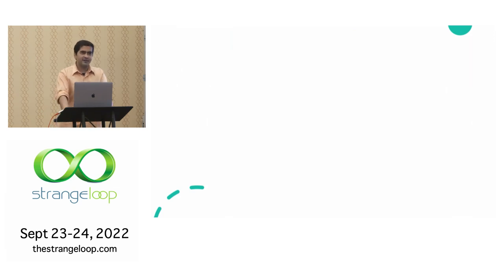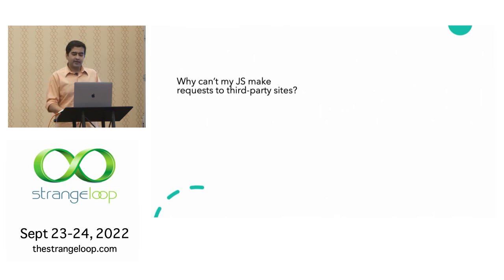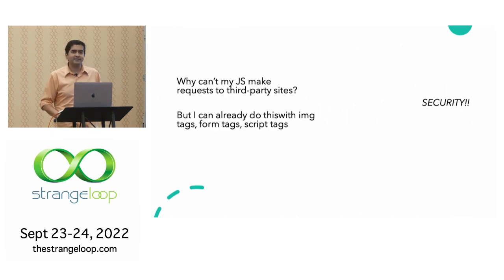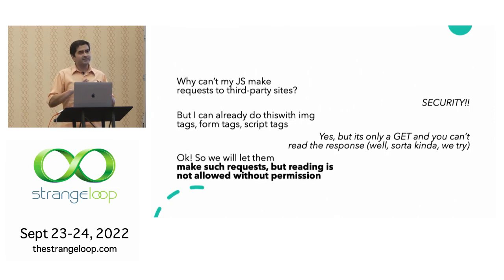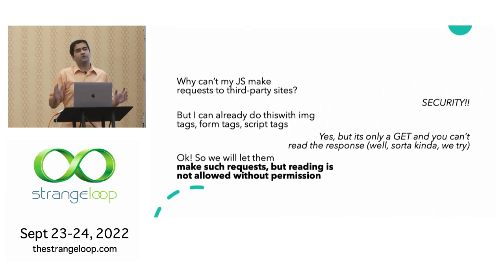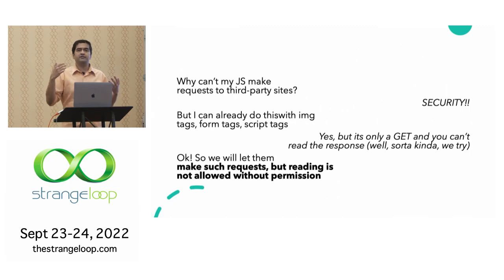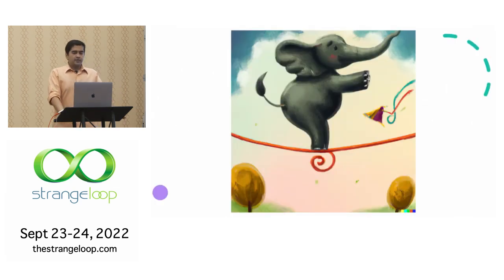But the thing they also focused on was XMLHttpRequest. They asked: why can't my JavaScript make third-party requests? Security people said: security — of course you can't. Developers said: well, I can already do this with image tags, form tags, script tags. Security people said: well, it's only a GET and you can't read the response, you can just render it. So the spec designers said: we'll only make such requests, and reading is not allowed without permission. We will allow cross-origin requests using JS that are already allowed, and allow reading the responses only with permission. The key thing to understand about CORS is: we only want to allow things that were already allowed with image tags, script tags, form tags — and allow reading the response on permission. This was to keep compatibility with the existing web.